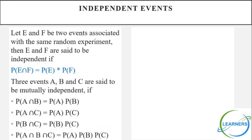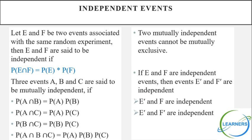Let's take the last concept: independent events. P(E∩F) = P(E) × P(F) — this is the main condition. Based on that we can do problems. If E and F are independent, then E' and F are independent, E and F' are independent, and E' and F' are also independent.